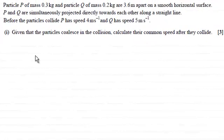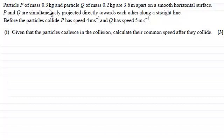Hi there, now we're given that a particle P of mass 0.3 kilograms and a particle Q of mass 0.2 kilograms are 3.6 meters apart on a smooth horizontal surface. P and Q are simultaneously projected directly towards each other along a straight line. Before the particles collide, P has a speed of 4 meters per second and Q has a speed of 5 meters per second. Given that the particles coalesce in the collision, calculate their common speed after they collide.